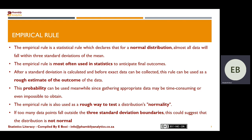What is the empirical rule? The empirical rule is a statistical rule which declares that for a normal distribution, all data will fall within three standard deviations of the mean. The empirical rule is most often used in statistics to anticipate final outcomes after a standard deviation is calculated and before more exact data can be collected. This rule can be used as a rough estimate of the outcome of the data.